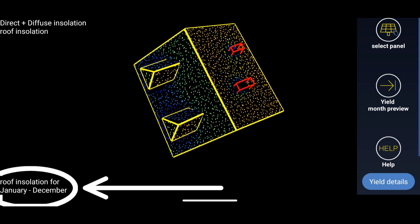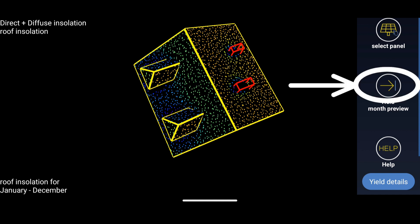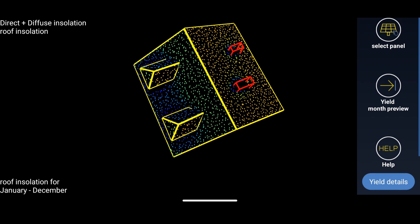Initially the insulation map is integrated for the entire year, from January to December. Click yield month preview to see the map calculated for individual months.